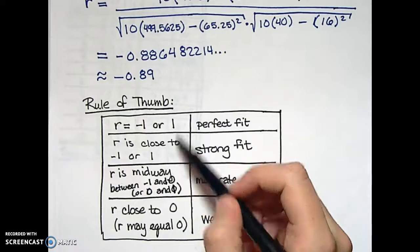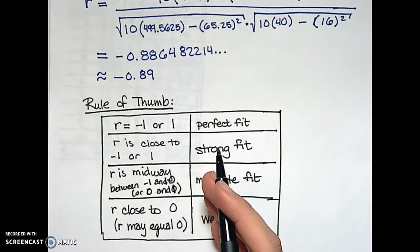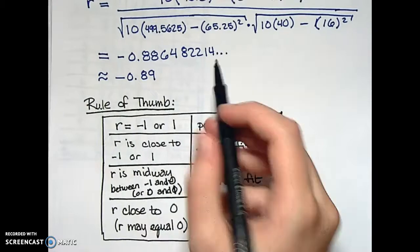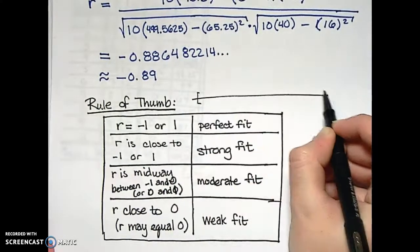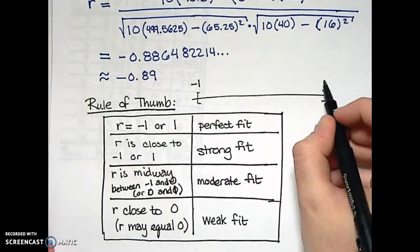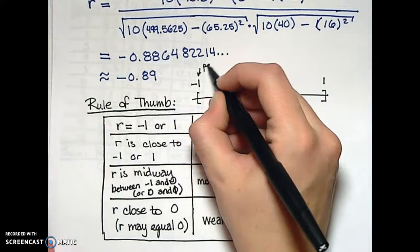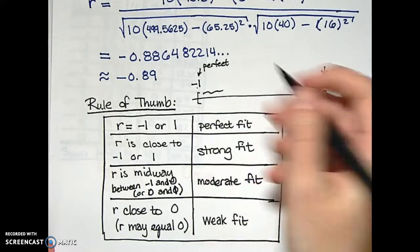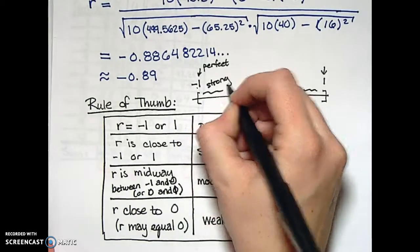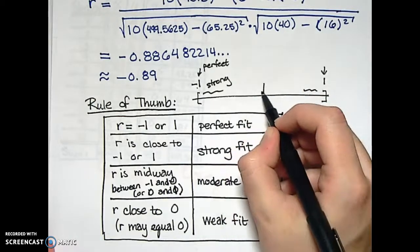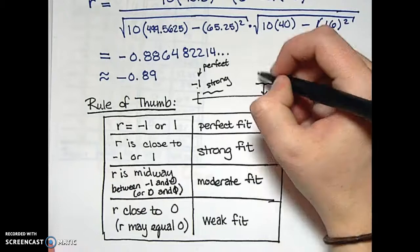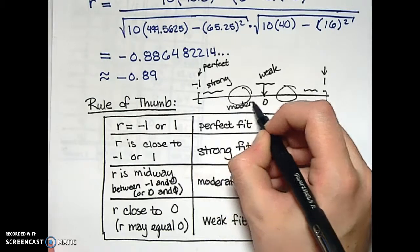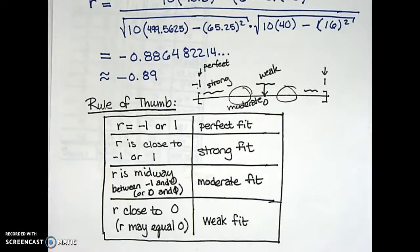Notice that this chart doesn't provide specific definite bounds for r — that's why we call it a general rule of thumb. On a number line, r falls between negative one and one: at either endpoint it's a perfect fit; near those endpoints it's a strong fit; near zero it's a weak fit; and in the areas between, it's a moderate relationship in terms of predictability between your two quantities.